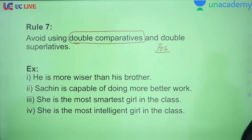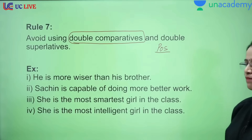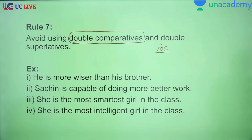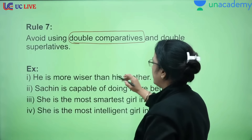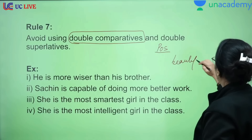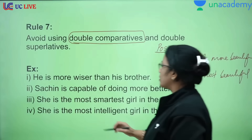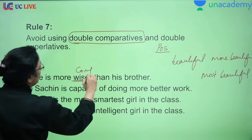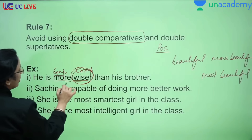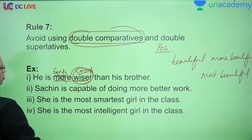Never use two comparatives or two superlatives in a sentence. For example: 'He is more wiser than his brother.' Where is the error? 'Wiser' is already the comparative form of 'wise' — adding 'more' gives us two comparatives in one sentence. Some adjectives like 'beautiful' cannot take '-er', so we use 'more beautiful'. But 'wiser' already makes the comparative, so 'more' must not be added. It should simply be: 'He is wiser than his brother.'